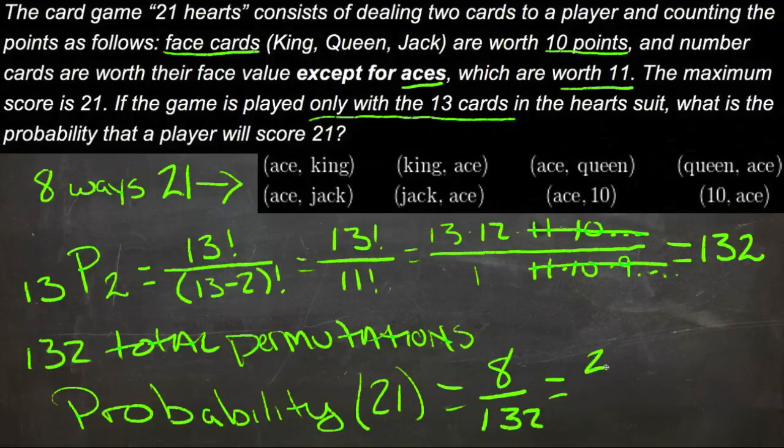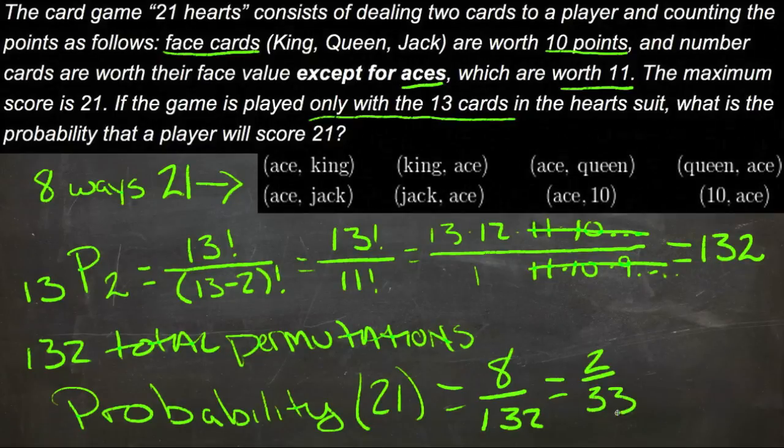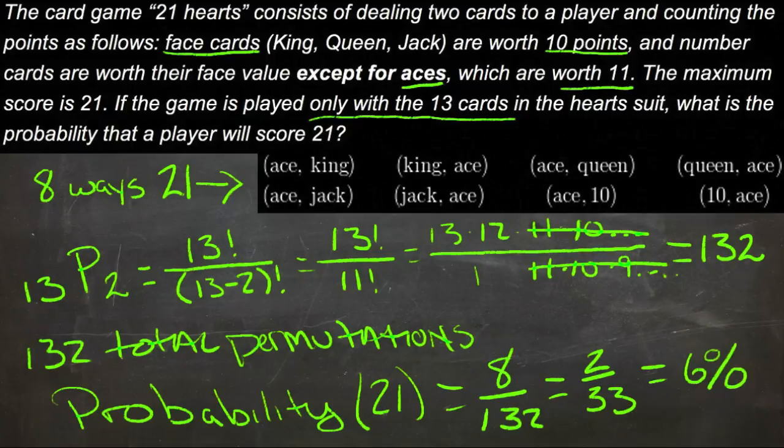That reduces to 2 out of 33, which would be about 6%. So our probability of getting 21 points is about 6%.